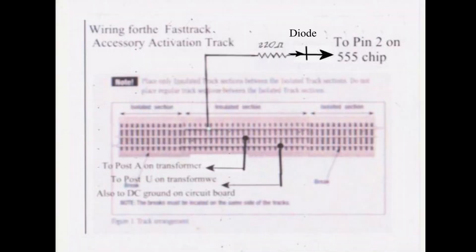This is the wiring diagram for using the fast track accessory activation track with the automated gateman. The wire from the insulated outside rail goes to pin 2 of the 555 chip.